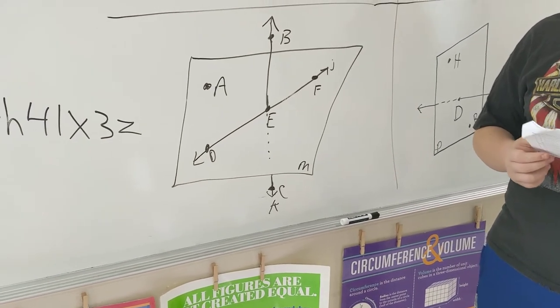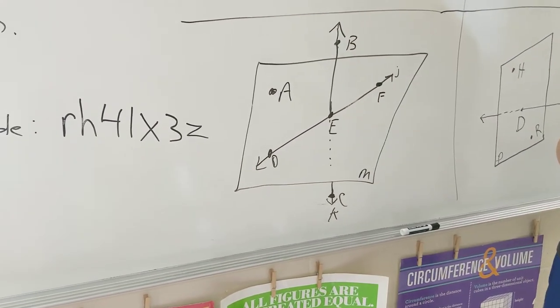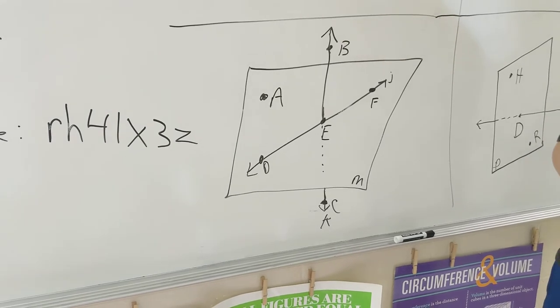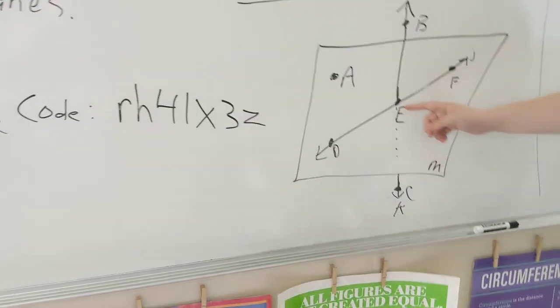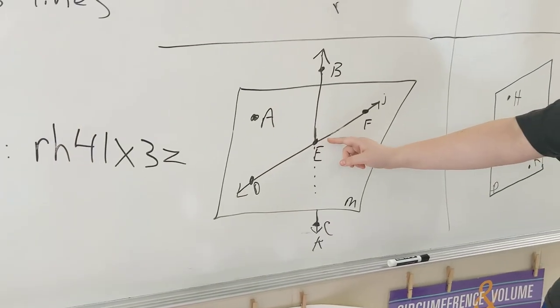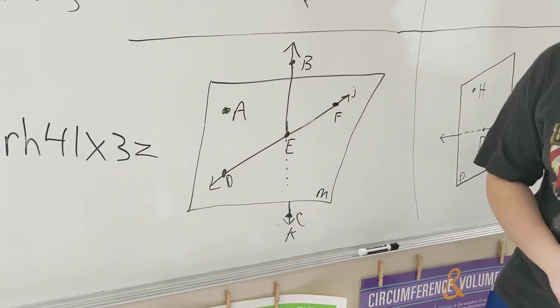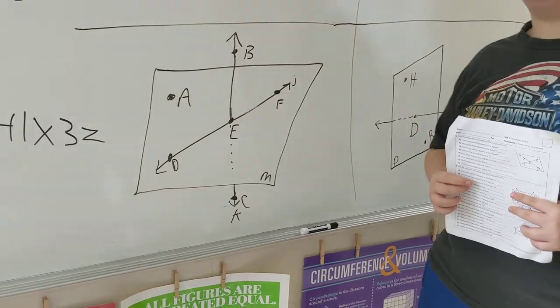And the intersection of plane M and line K. That would be point E, which is right in the center here. Very good. Point E is at the intersection. Thank y'all.